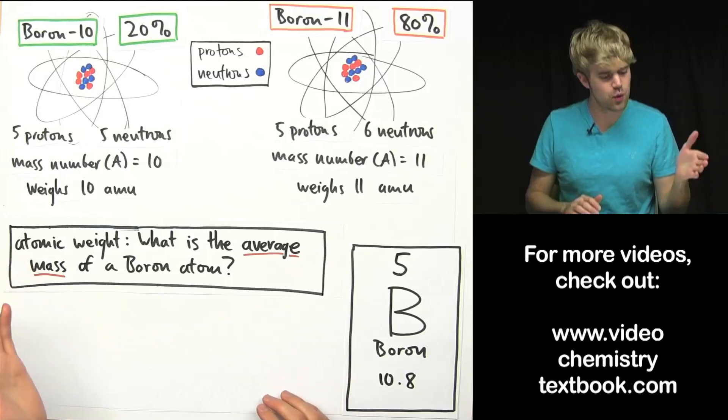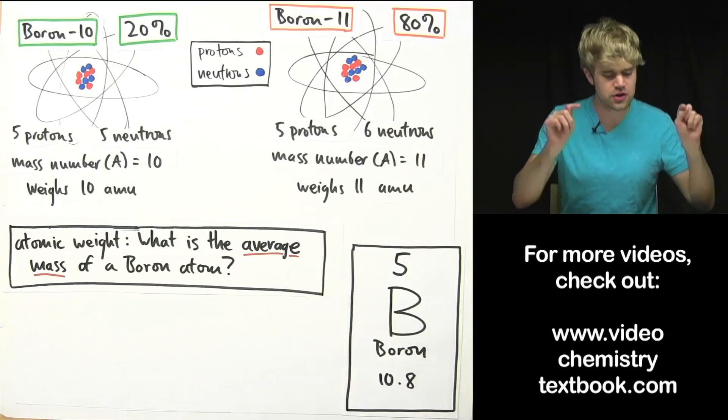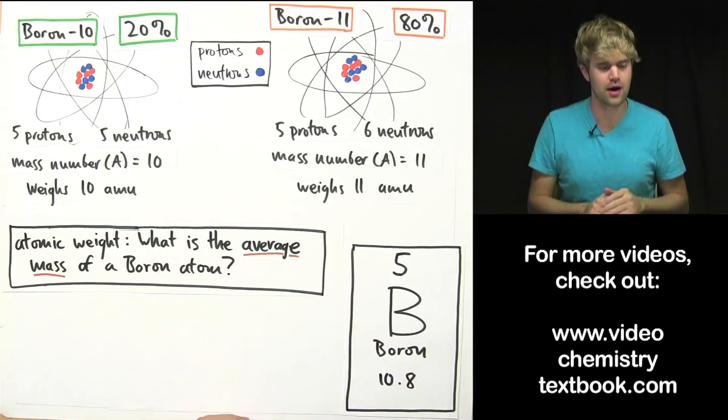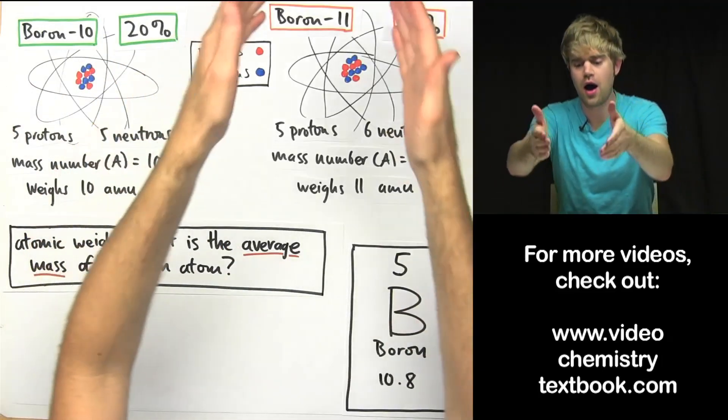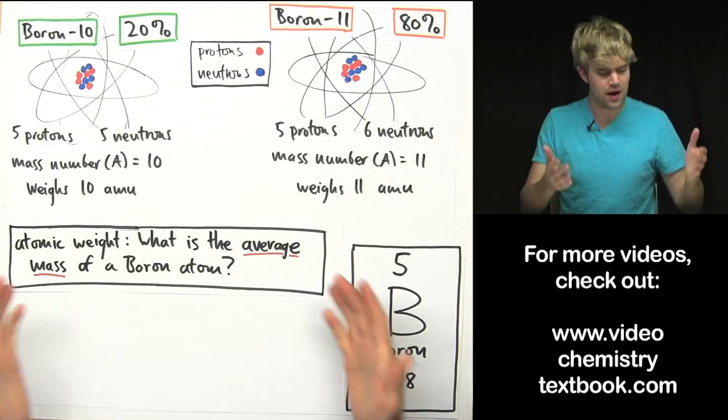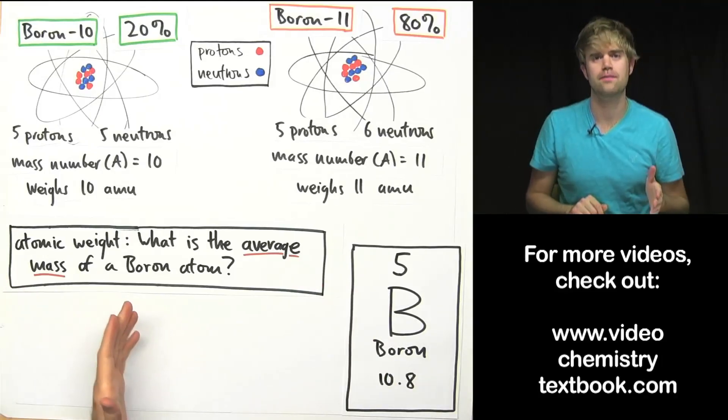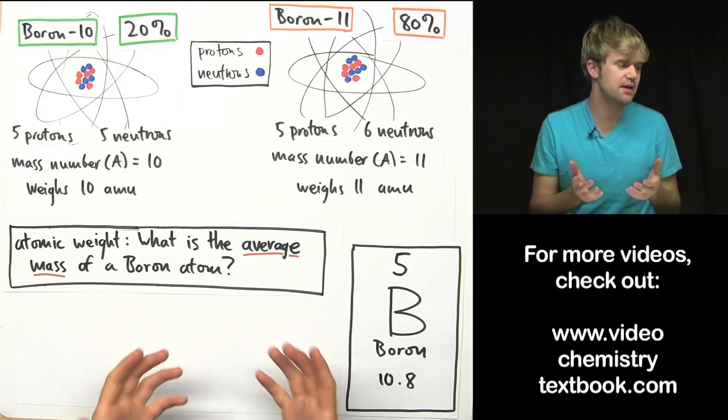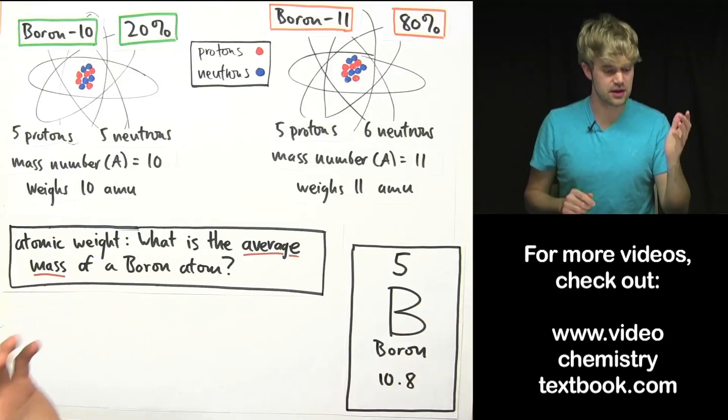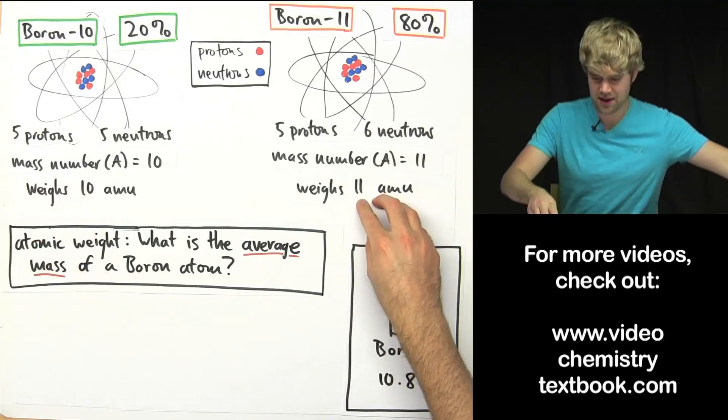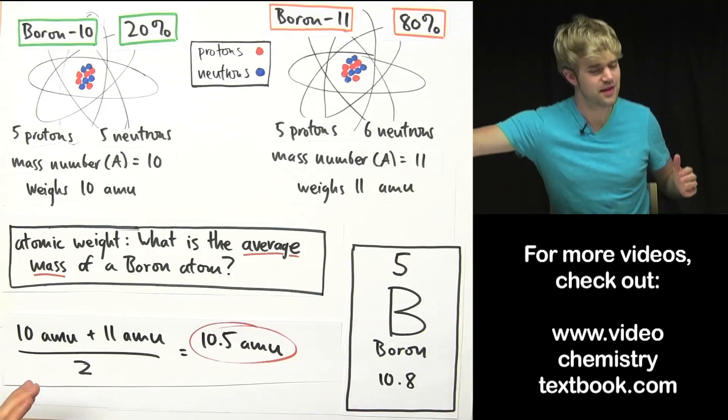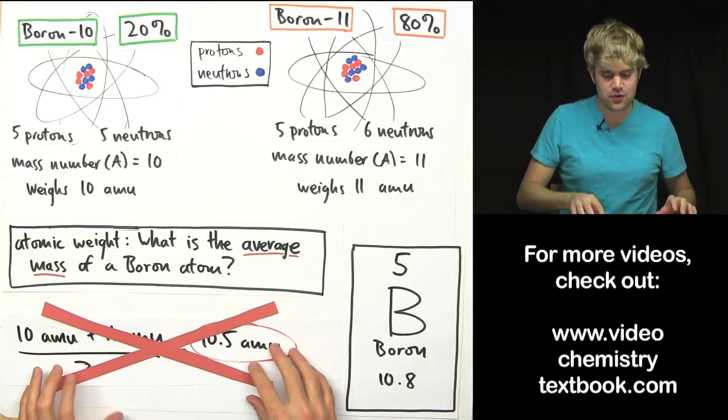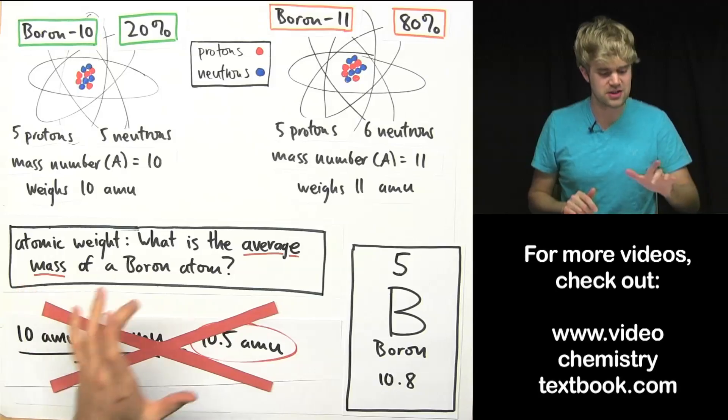And atomic weight asks us what is the average mass of a boron atom? So, some of them weigh 10 amu, others weigh 11 amu. What is the average mass of a boron atom? Now you might think average, that's easy, 10 amu plus 11 amu and I can divide by 2. But no, that's wrong.